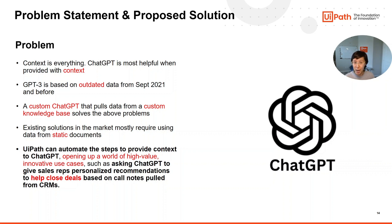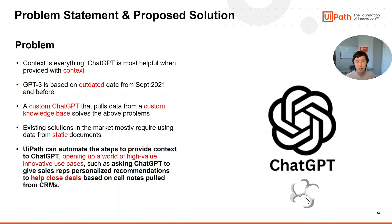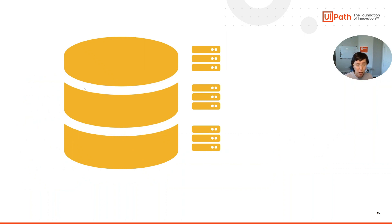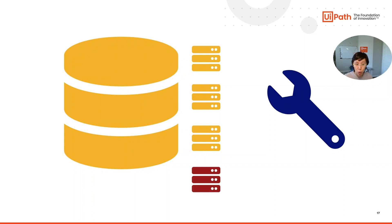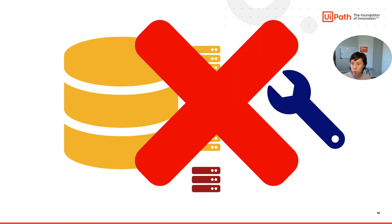Before I dive into that, I'd like to quickly recap the current state of ChatGPT and why our solution will be an enhancement. Context is everything — ChatGPT is most helpful when provided with context. GPT-3 is based on outdated data from September 2021 and before. A custom ChatGPT that pulls data from a custom knowledge base solves those problems. Existing solutions in the market mostly require using data from static documents, and you would have to constantly update your inputs — whenever you have a new document added to your knowledge base, you'd have to manually add it. The manual maintenance really makes it not a viable solution for business use.